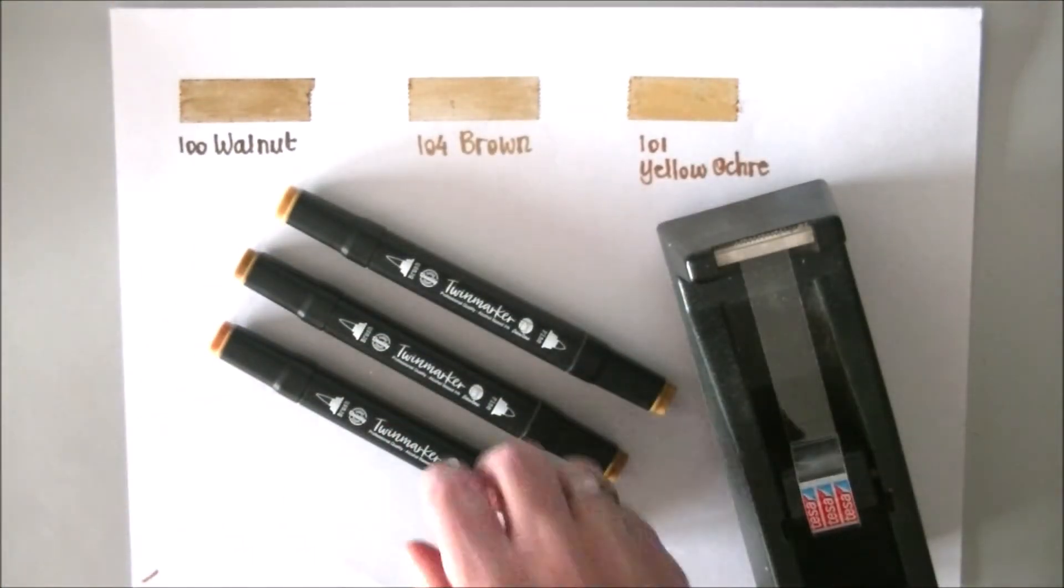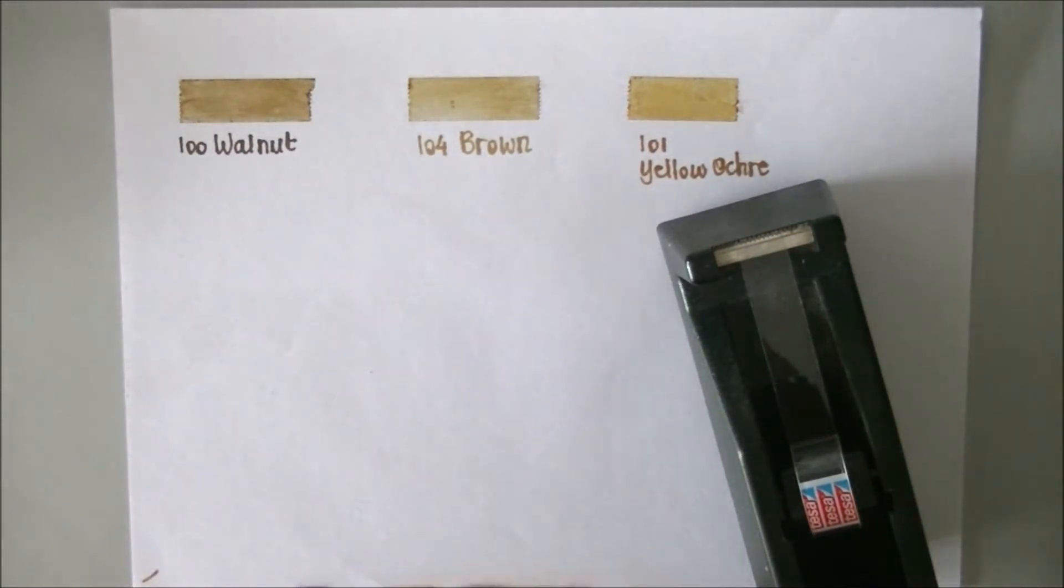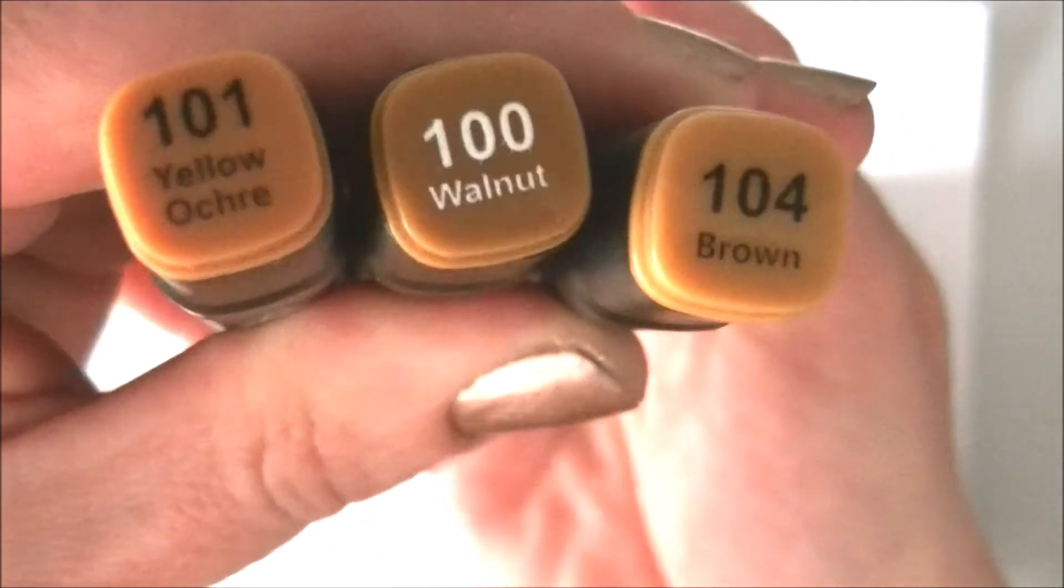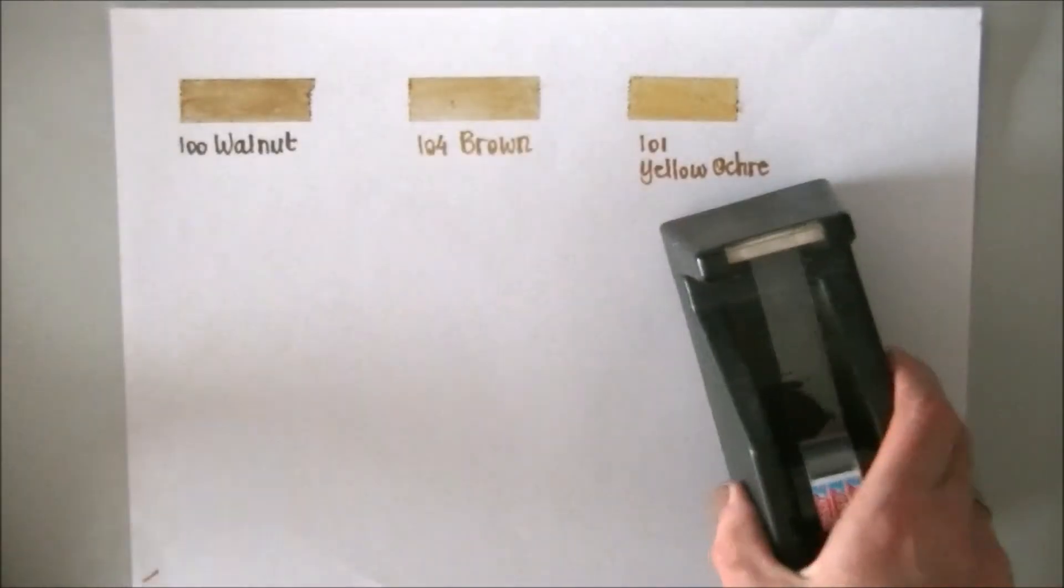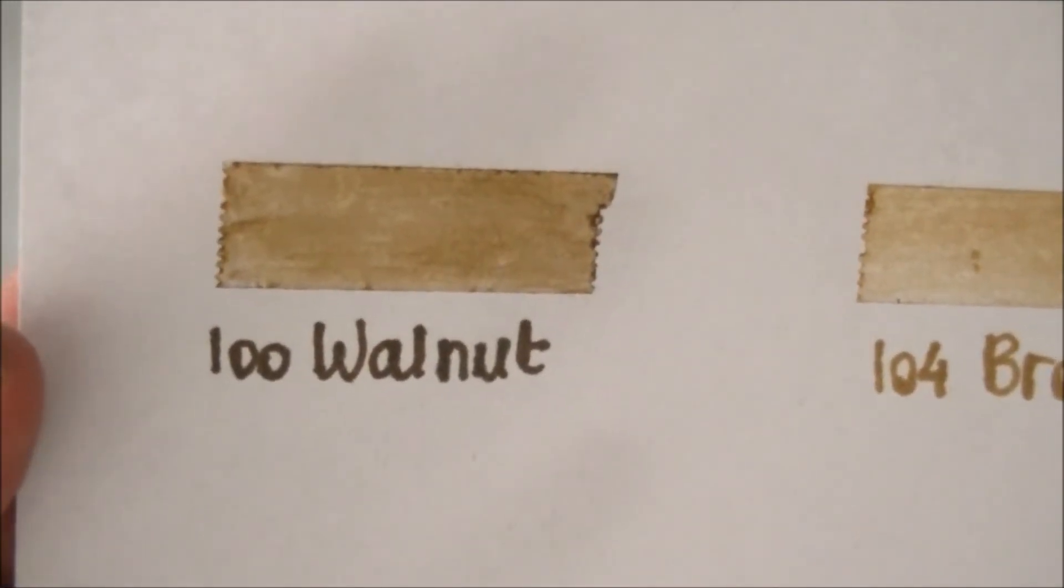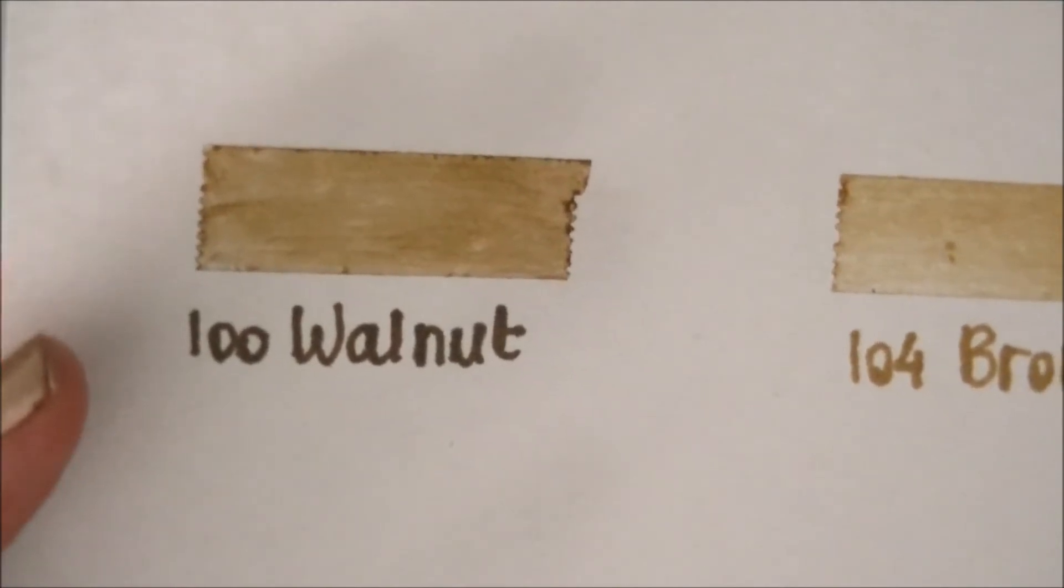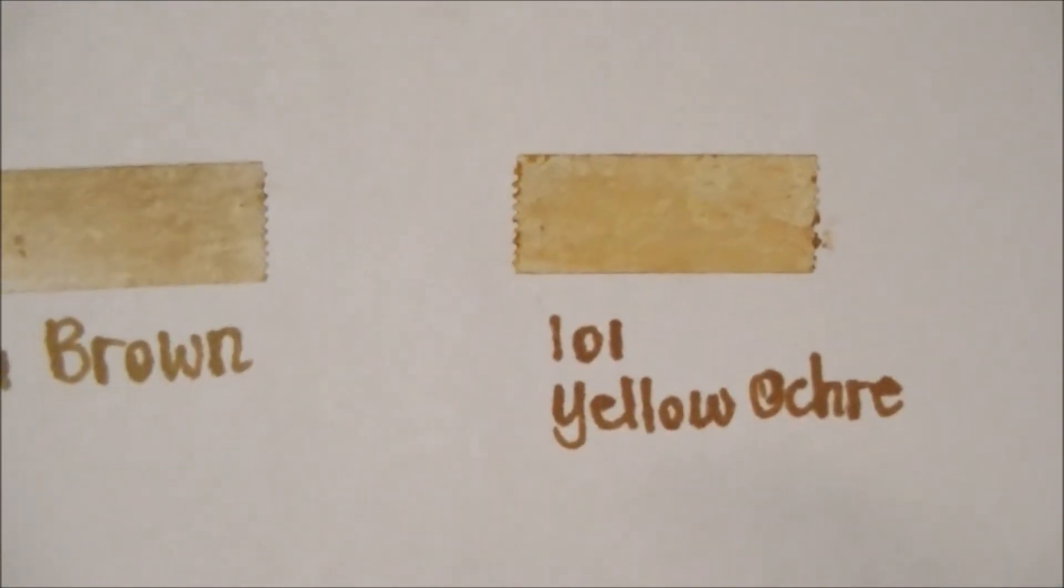So the ones that I used are these colors right here. Let me put them a little bit closer. Yellow ochre, walnut and brown. And I do have an example right here. I hope it focuses. This is the walnut color. It's a little bit dark brown color. This is the brown and the yellow ochre has a touch of yellow in it.